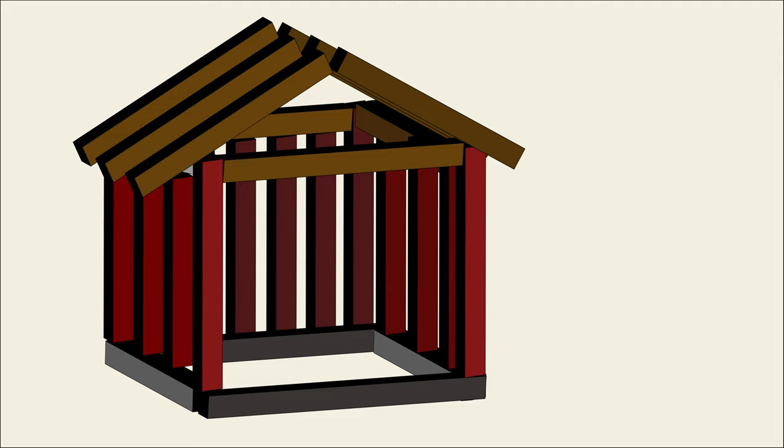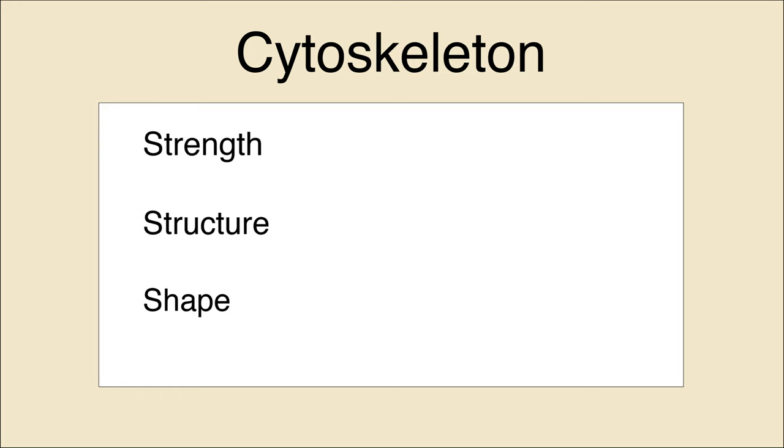The structure and function of the cytoskeleton is incredibly dynamic and diverse. In some ways, the cytoskeleton is like the framing of a house. It provides the cell with strength, structure, and shape.